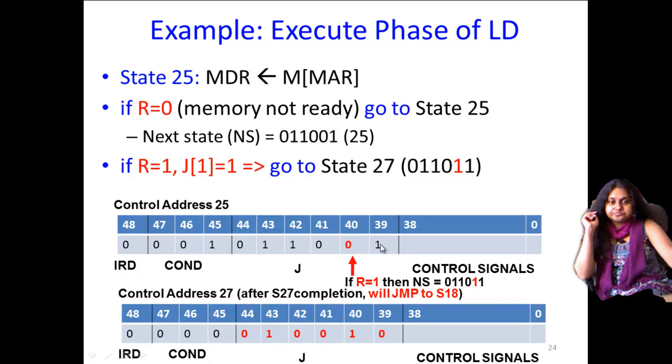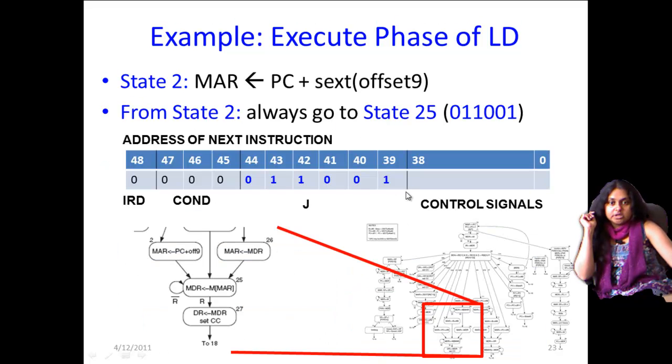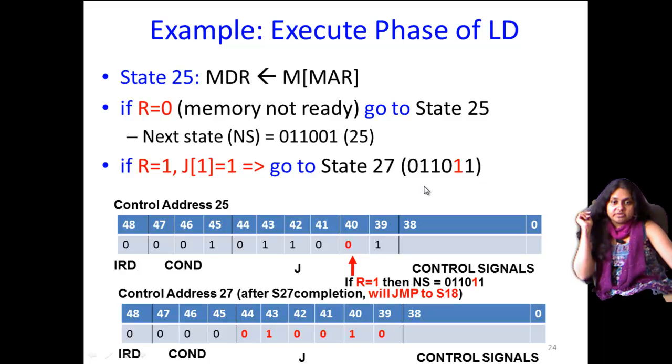So when r is equal to a 1, what happens is that our previous value of 0, 1, 1, 0, 0, 1 for the j bits, now will become 27, state 27, which is 0, 1, 1, 0, 1, 1. So instead of 0, 1, 1, 0, 0, 1, then you get 0, 1, 1, 0, 1, 1. And that is in the case that r is equal to 1.